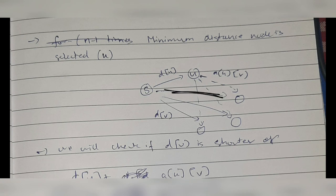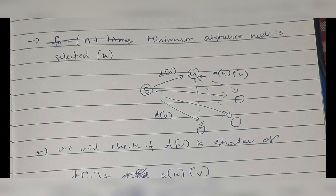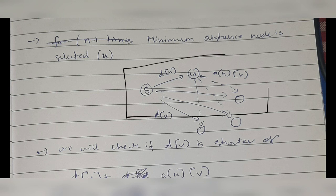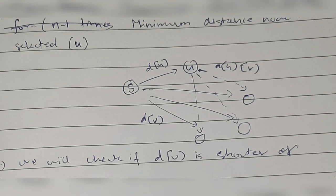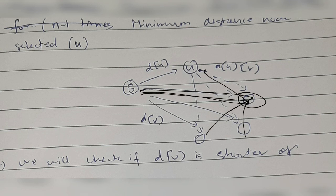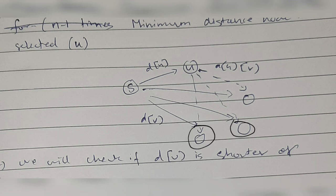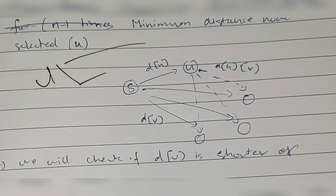If the indirect path through u is shorter, then d[v] is updated to d[u] plus a[u][v]. I recommend watching the previous video linked in the description for a clearer understanding. After all iterations — selecting the nearest node each time and checking all combinations — the d array will contain all minimum distances from the source vertex, which we then output.